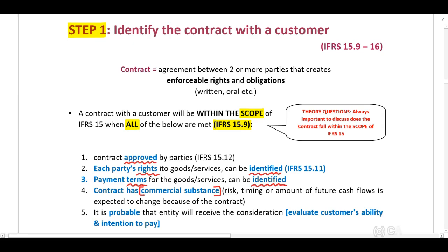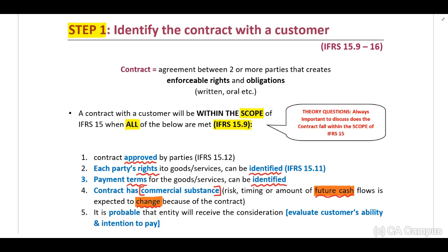What does it mean if a contract has commercial substance? In a business transaction, a contract will have commercial substance when it is expected that the future cash flows of that entity will change due to the contract. When you refer to commercial substance, you need to think about future cash flows relating to that contract — will the contract have an effect on the future cash flows of the entity?